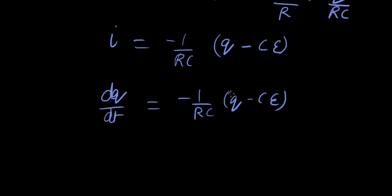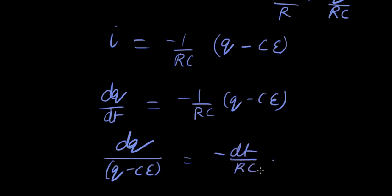Now let's take the term that involves q along with the dq, and put the others there. So dq over q minus ce equals minus dt over rc.